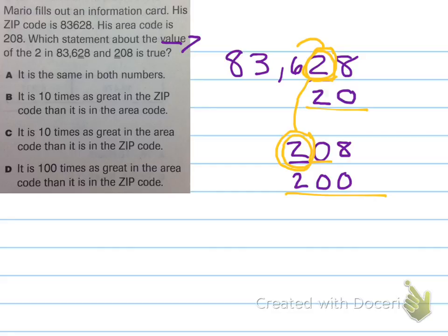So, let's look at our answer choices. Now that I've kind of figured it out, I know this 2 is greater. I know this 2 is 10 times greater, actually. So, let's look at our answer choices. A, it is the same in both numbers. Okay, definitely not. They are not the same value.